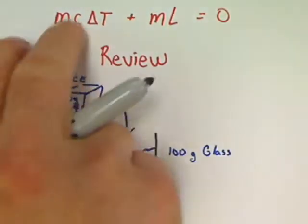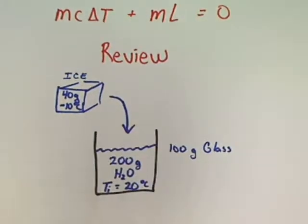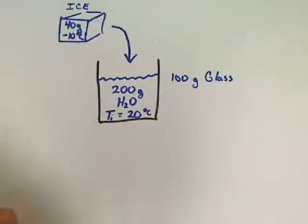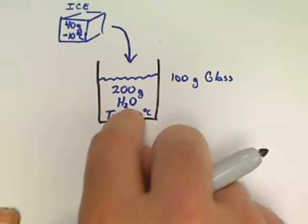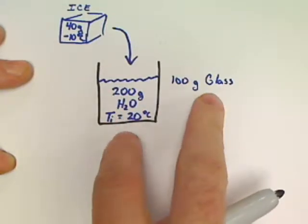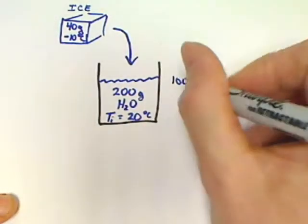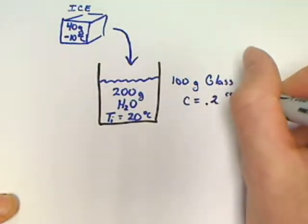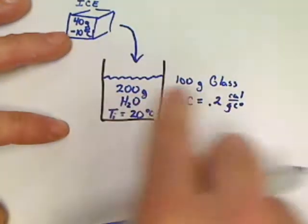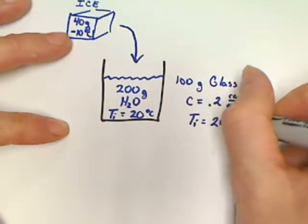This is a gigantic MC Delta T and ML type question, and I've got a straightforward way of doing it. First, recognize all the Q's in the question. We've got a Q for the water and a Q for the glass. We have water and glass at thermal equilibrium at 20 degrees Celsius. C for glass is 0.2 calories per gram Celsius, which I really like.